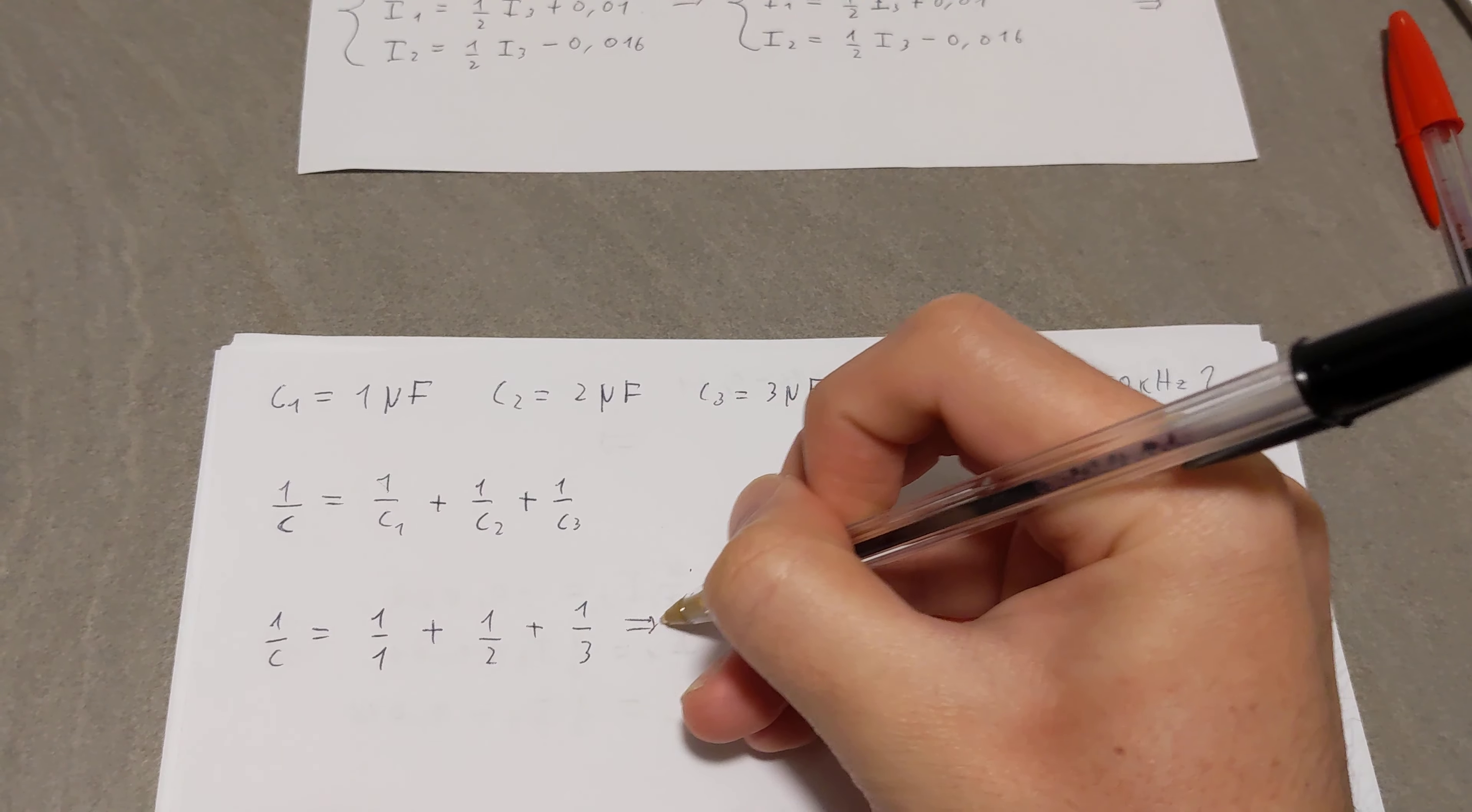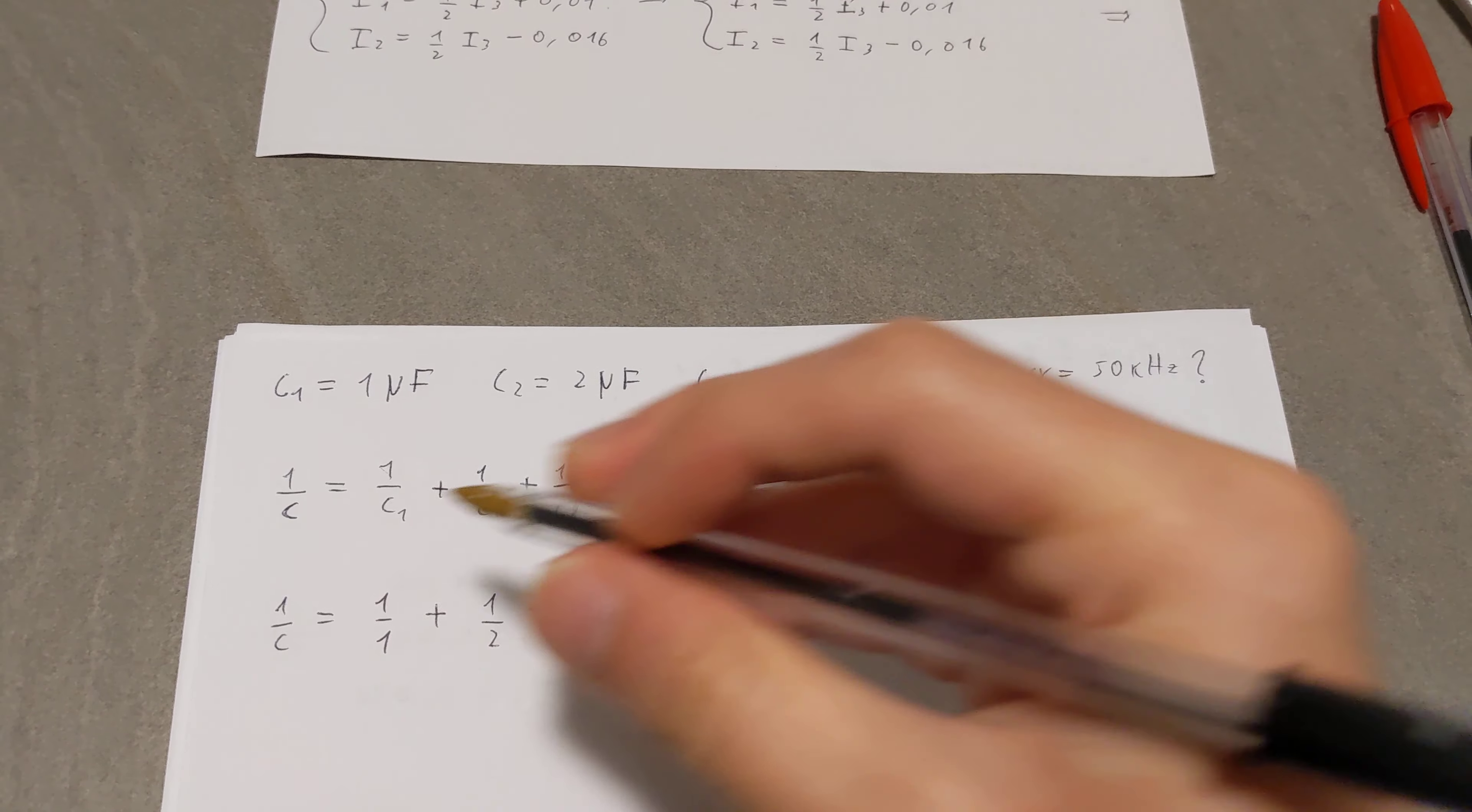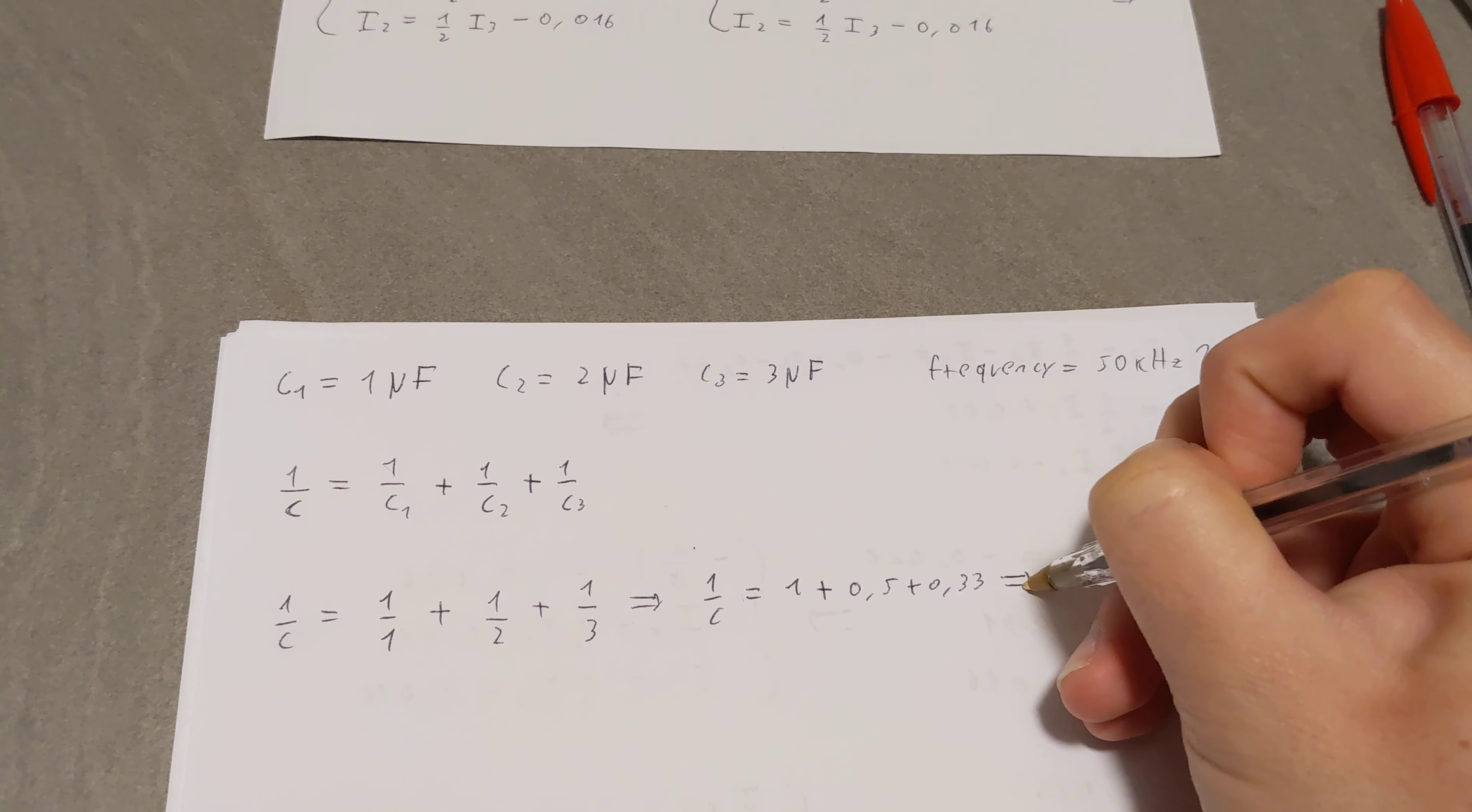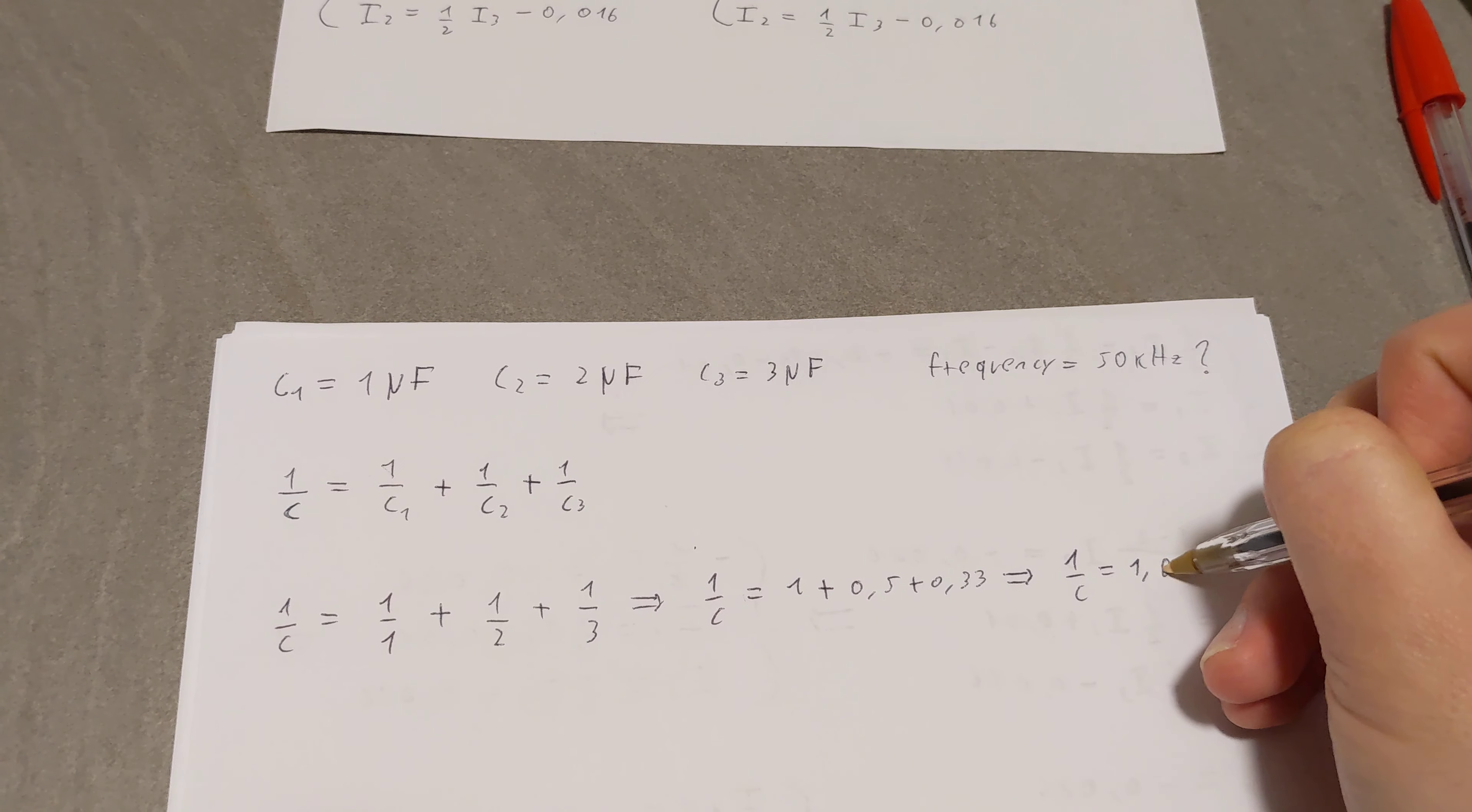At this point, 1 over C is just 1 plus 0.5 plus 0.33. Therefore, 1 over C is 1.83.